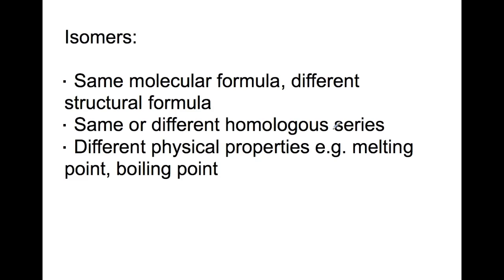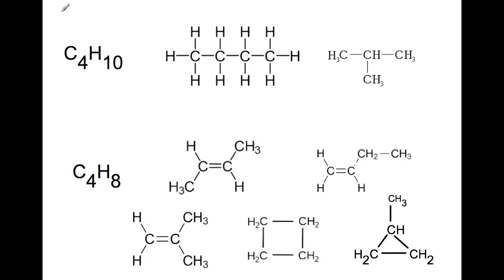Isomers are molecules which have the same molecular formula but different structural formula. You should be able to draw and name isomers, and from a molecular formula draw different isomers. They can be of the same or different homologous series — for example, cycloalkanes and alkenes — and they often have different physical properties such as melting point and boiling point. Here we have isomers of C4H10 and C4H8.